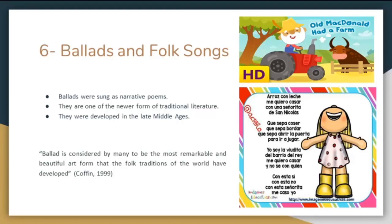The next category is ballads and folk songs. Ballads were sung as narrative poems. They are one of the newer forms of traditional literature and were developed in the Middle Ages in Europe. The American ballad is considered by many to be the most remarkable and beautiful art form that the folk tradition of the world has developed, according to Coffee in 1999. Examples include Old MacDonald Had a Farm and Arroz con Leche from Latin America.